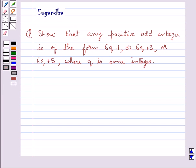Hello and welcome to the session. Today I'll help you with the following question. The question says, show that any positive odd integer is of the form 6q plus 1 or 6q plus 3 or 6q plus 5 where q is some integer.